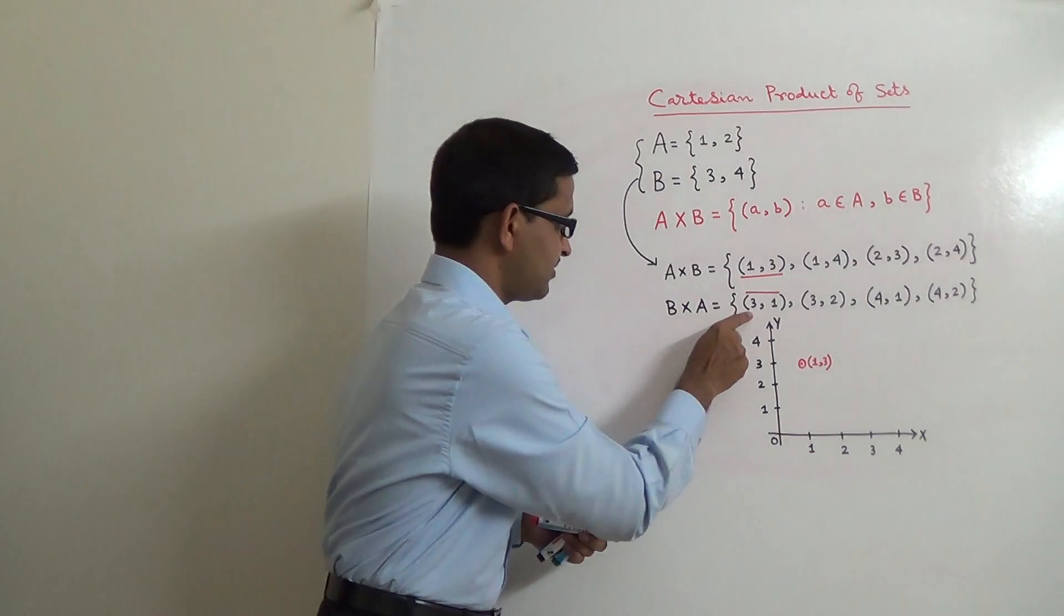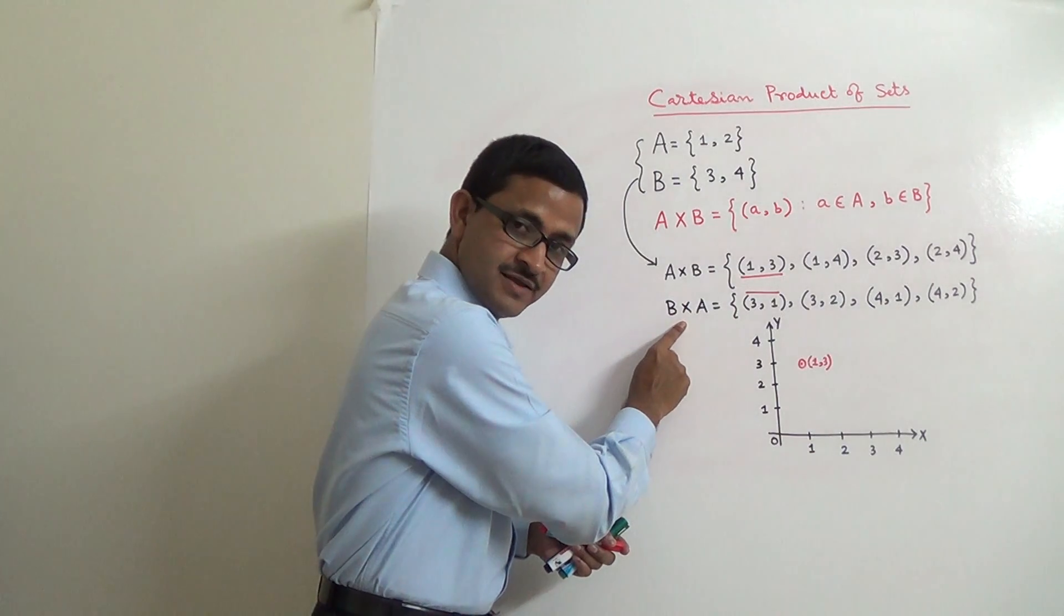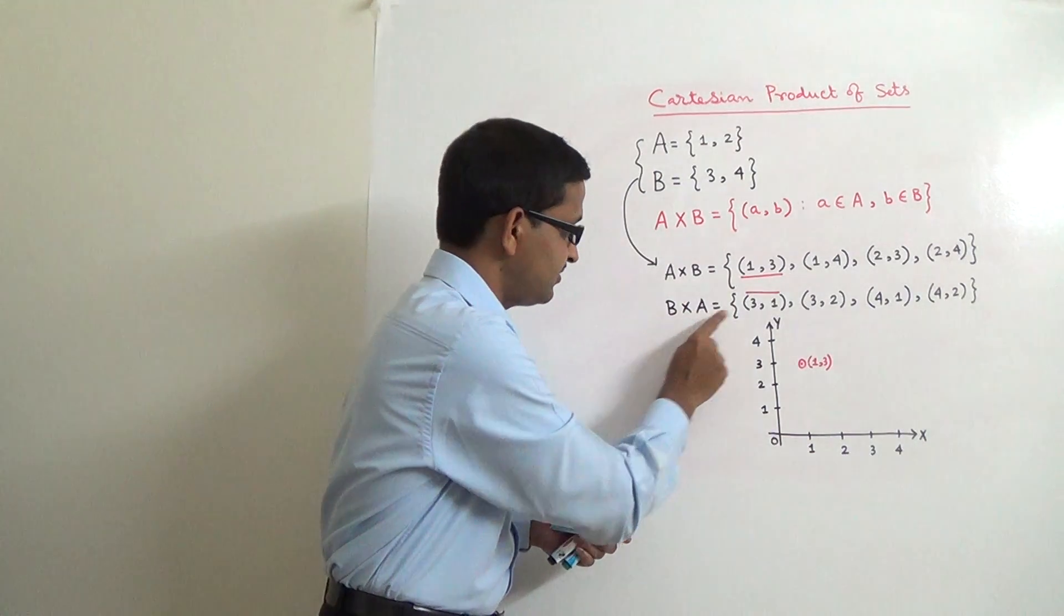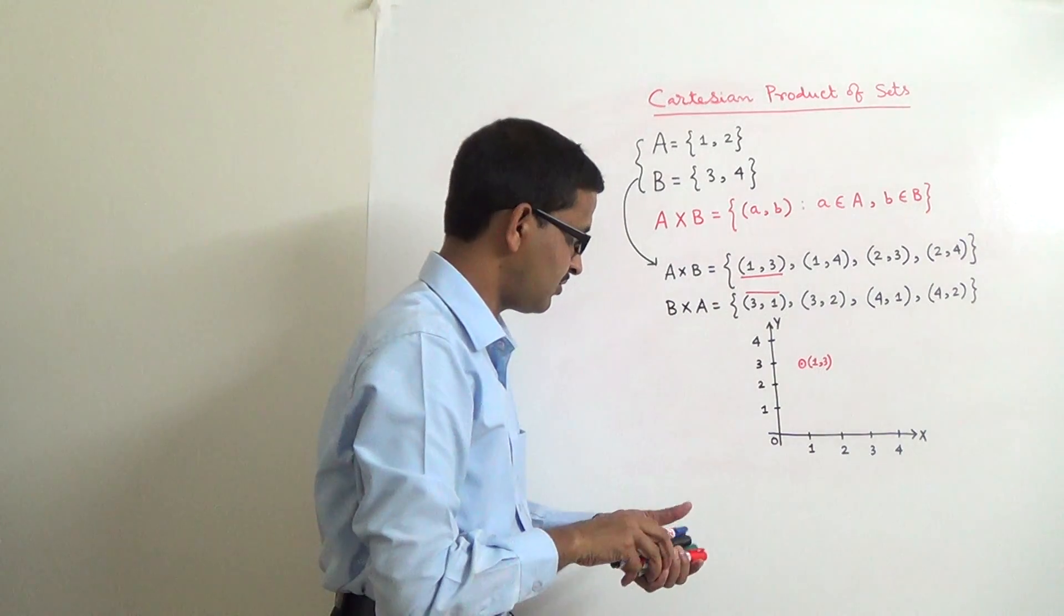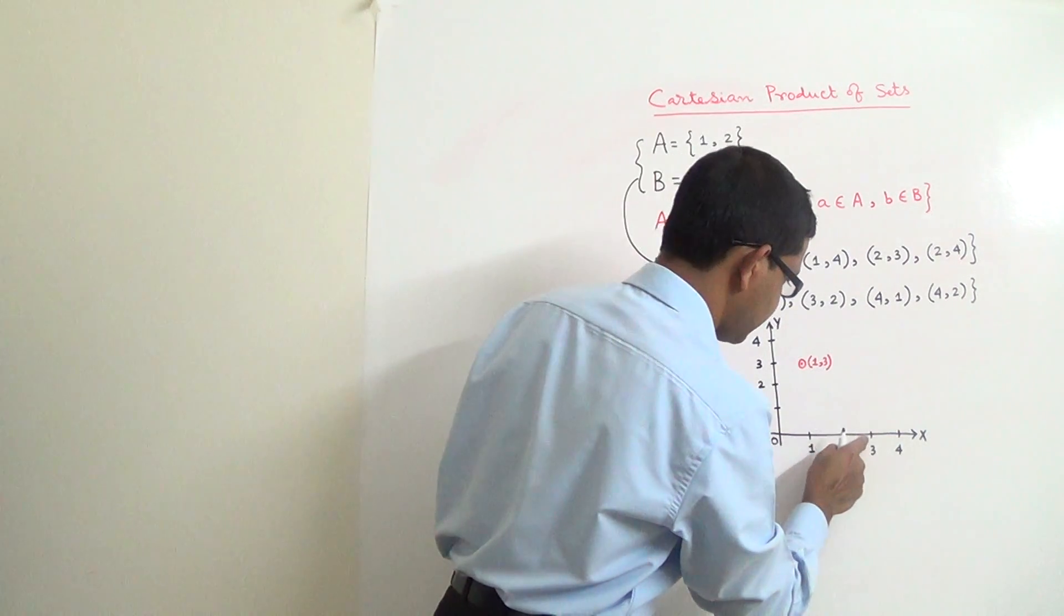And, the first element of the set B cross A, where it will be? It is (3,1). (3,1) means, along x-axis I will go 3 units.